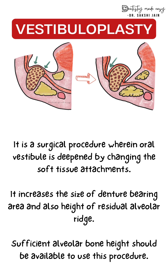Vestibuloplasty is done when there is inadequate vestibular depth due to atrophy or high muscle or soft tissue attachment, so as to increase the retention and stability of the denture. For this procedure, there should be a sufficient height of alveolar bone present. If there is extreme resorption of the ridge, you cannot go for vestibuloplasty.